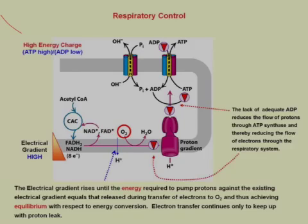At that point, the electron transport chain stops and waits for the hydrogen ion concentration to decrease. If the electron transport chain stops, you have a backup of FADH2 and a backup of NADH. All of this signals back to the citric acid cycle, or the TCA. High concentrations of NADH, high concentrations of FADH, and high concentrations of ATP all feed back and stop the TCA cycle.